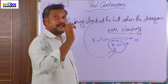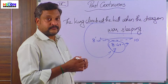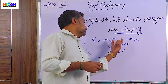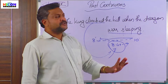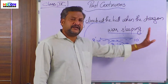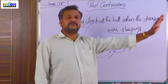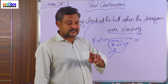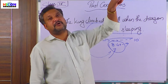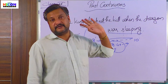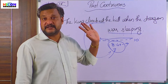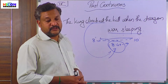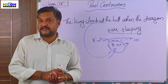To express an activity that was continuing at a point of time in the past — we don't need to worry about when it started or ended. At this particular time, when the king was climbing up the mountain, what was happening? The dragon was sleeping. That is past continuous tense.